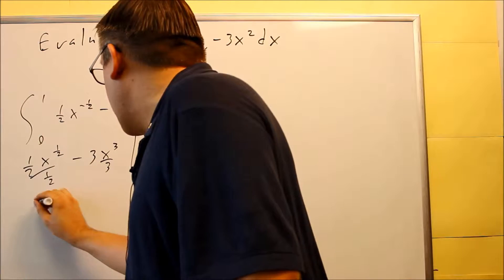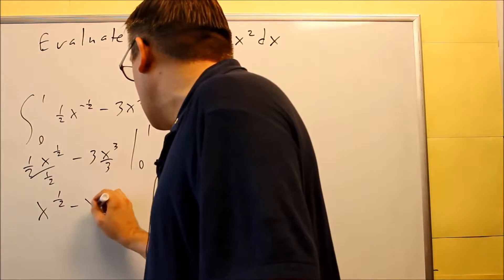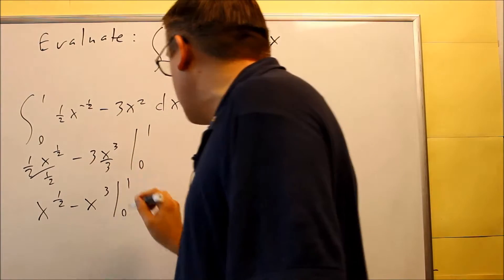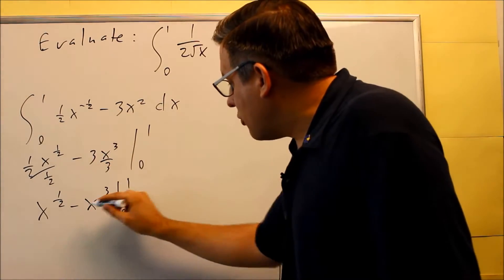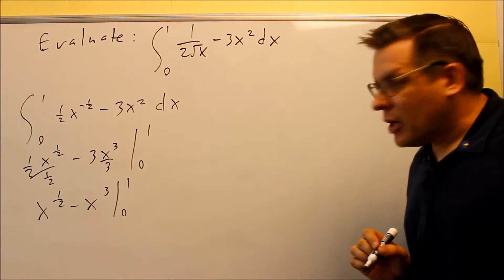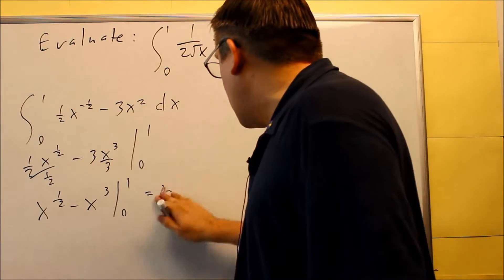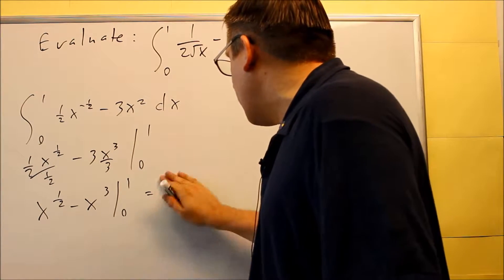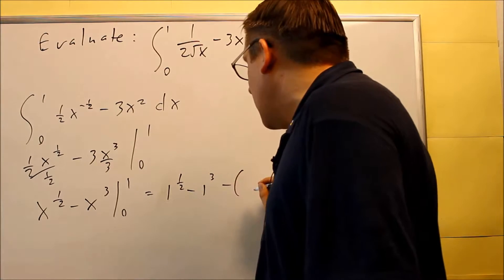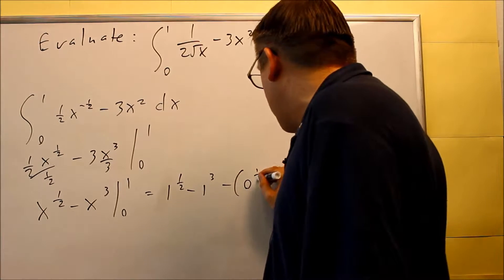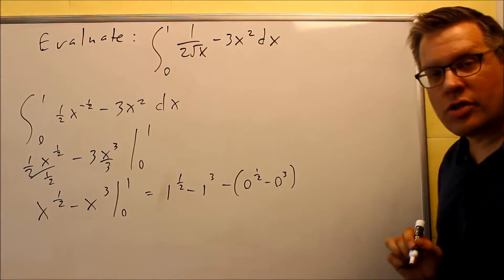And so then I get x to the 1/2 minus x cubed, and I'm going between 0 and 1. Now that I got it down to this point, I have my anti-derivative, putting in my top and bottom ones. I have 1 to the 1/2 minus 1 to the third, and then I'll do that with zeros in for both of those, which that's just going to turn into a 0.